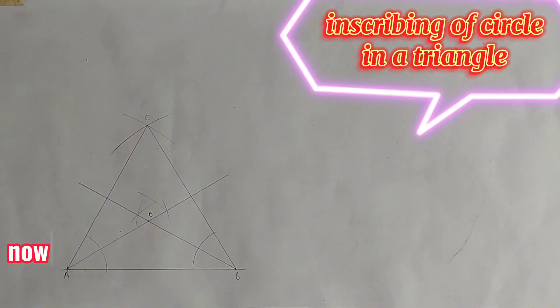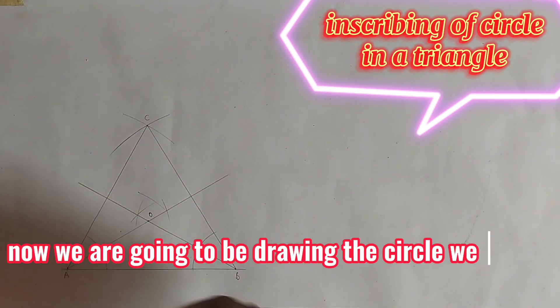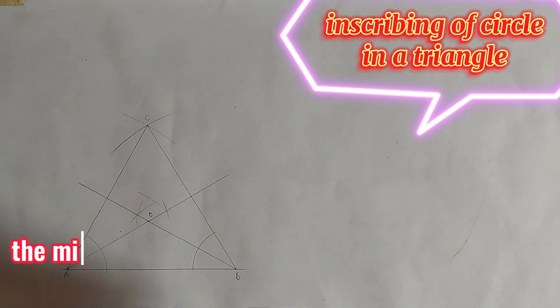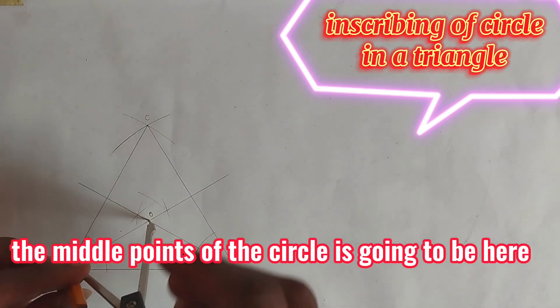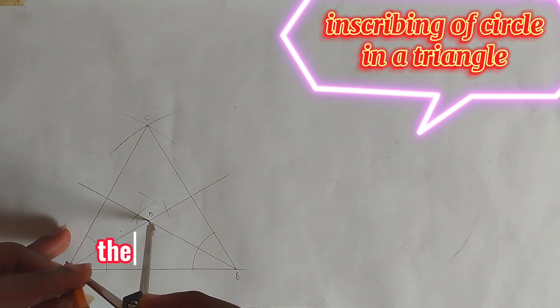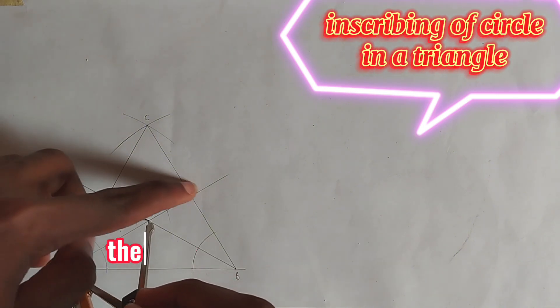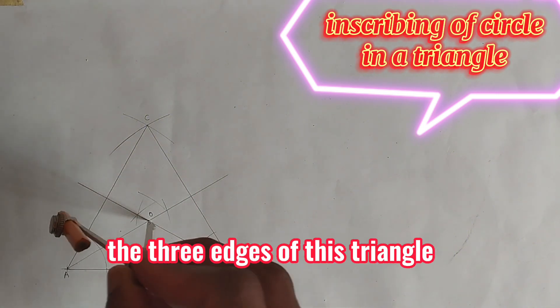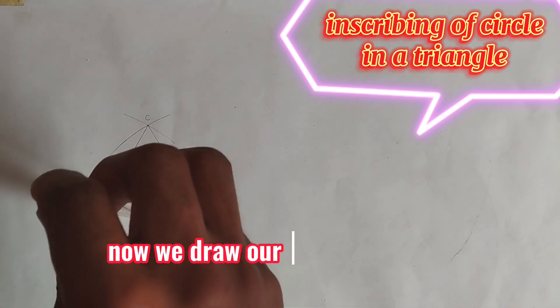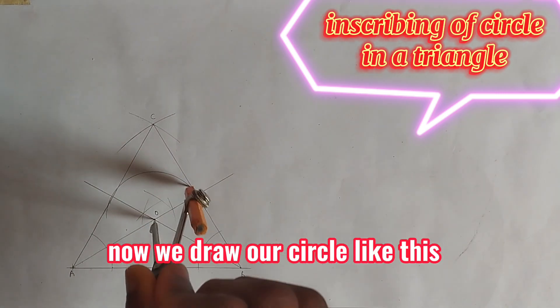Now we are going to be drawing the circle. The middle point of the circle is going to be here. The circle is going to be touching the three edges of this triangle. So now we'll draw our circle like this.